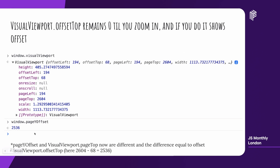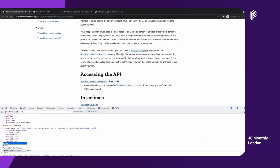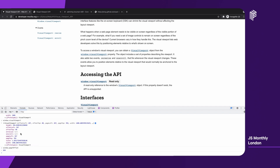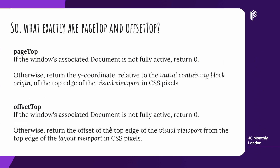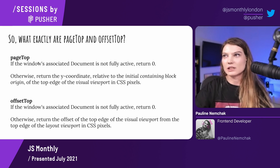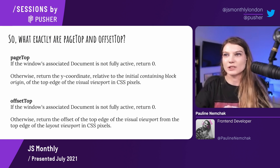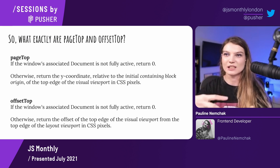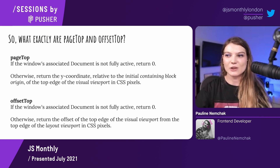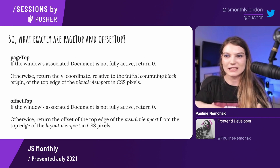If you notice the difference between the pageYOffset and the pageTop, it will equal offsetTop. I want to explain why. If you just read the spec, it might be a bit complicated. It says pageTop is the Y coordinate relative to the initial containing block origin of the top edge of the visual viewport in CSS pixels. And offsetTop returns the offset of the top edge of the visual viewport from the top edge of the layout viewport in CSS pixels.